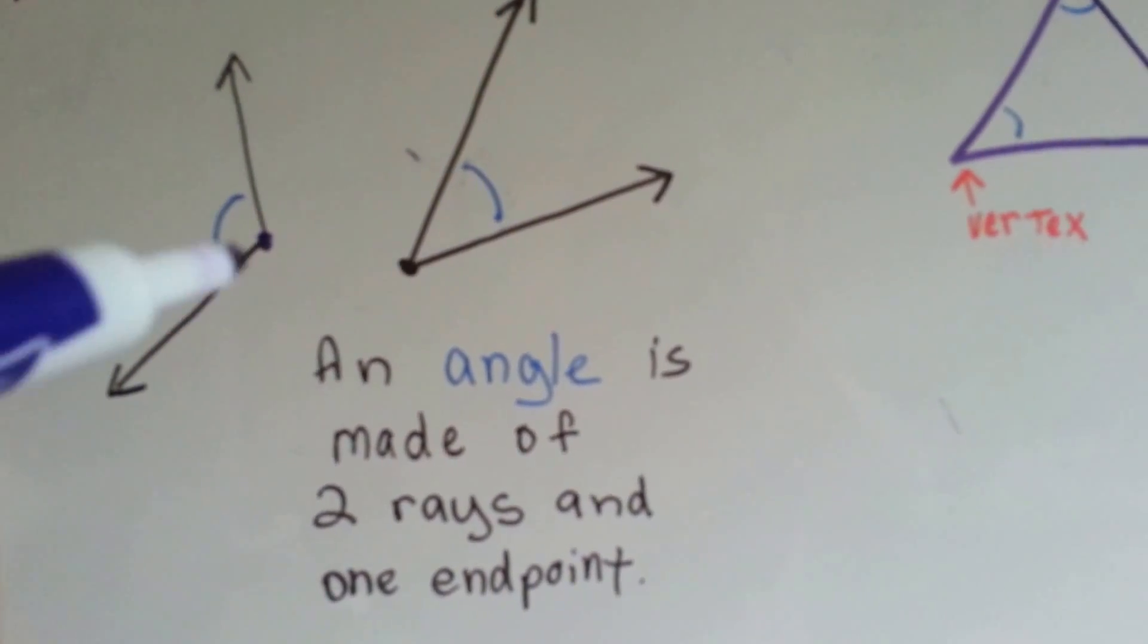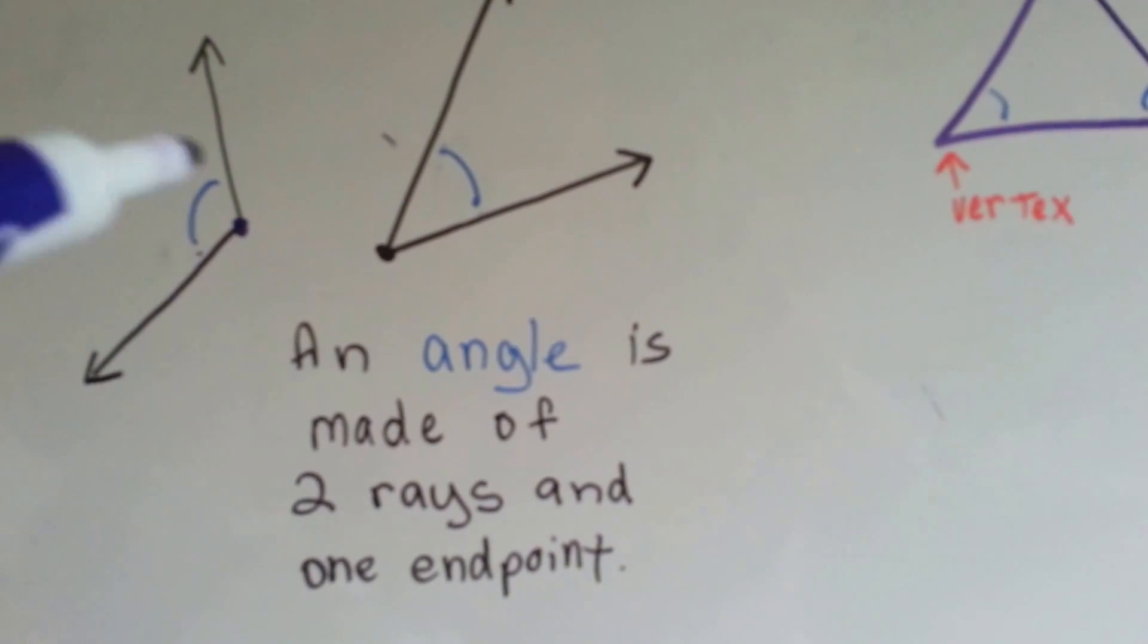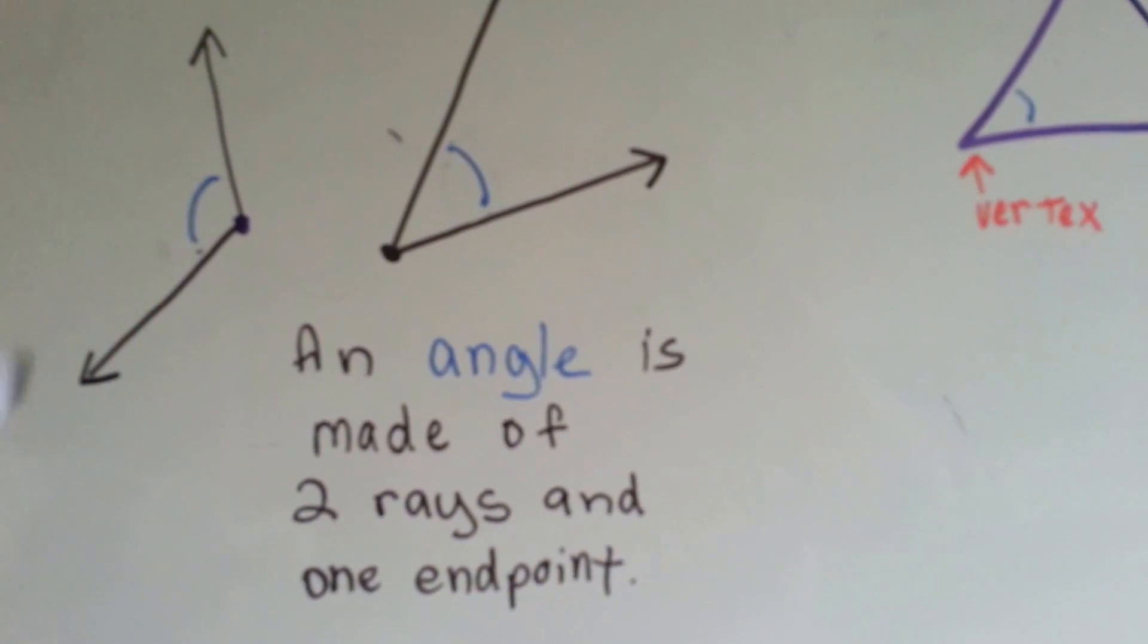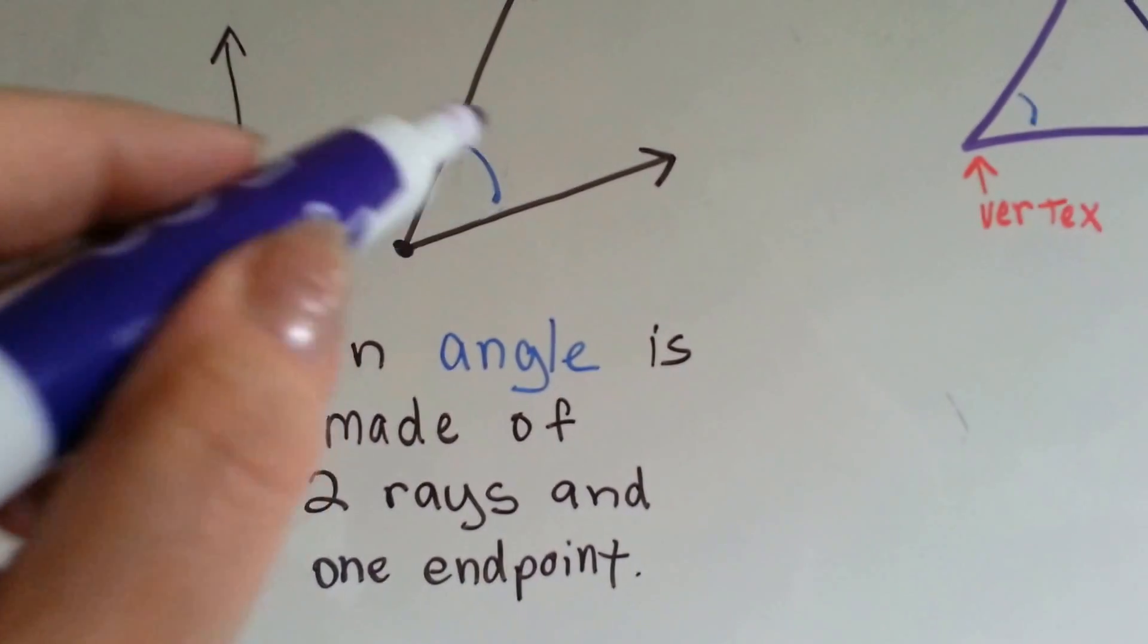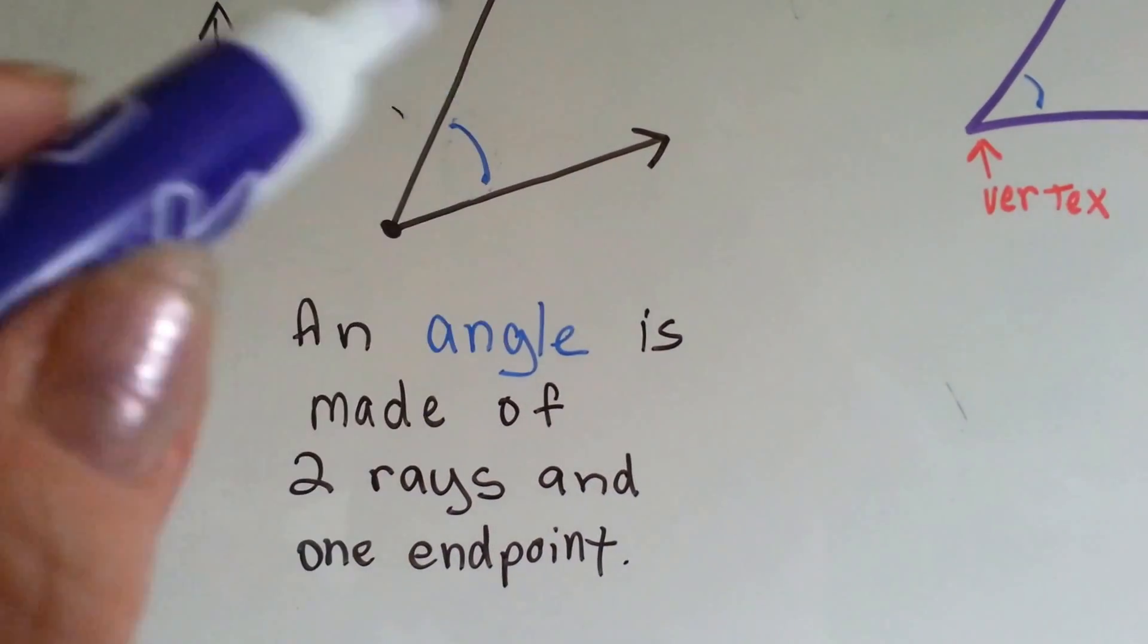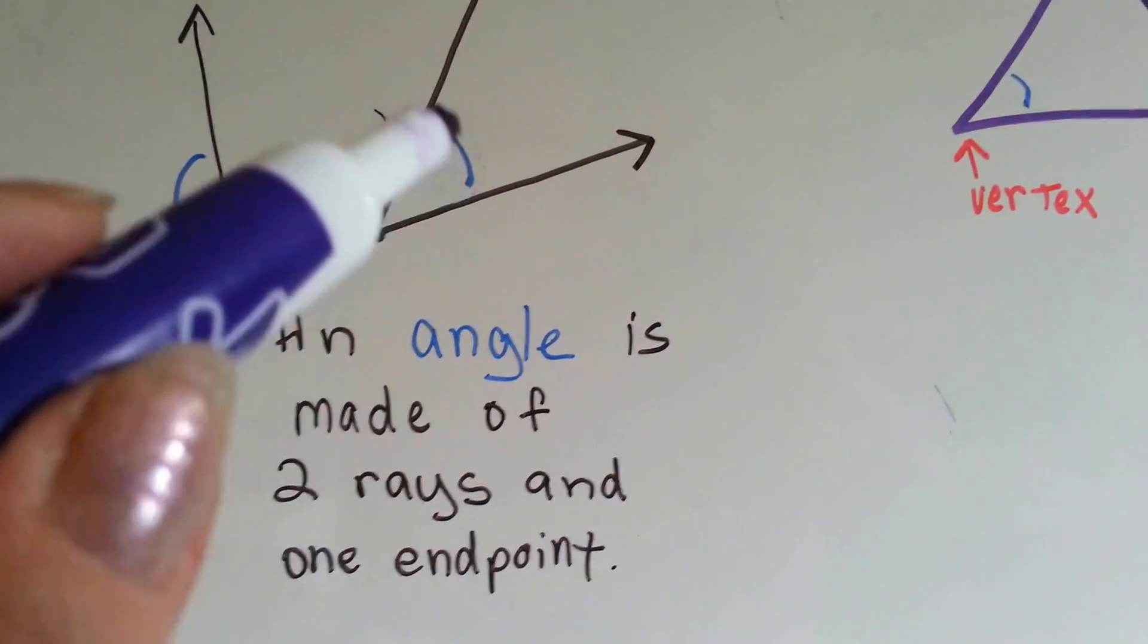When you have two of them that meet at an endpoint, the space inside of here is the angle. See? That's the angle. There's two rays, one endpoint, and an angle.